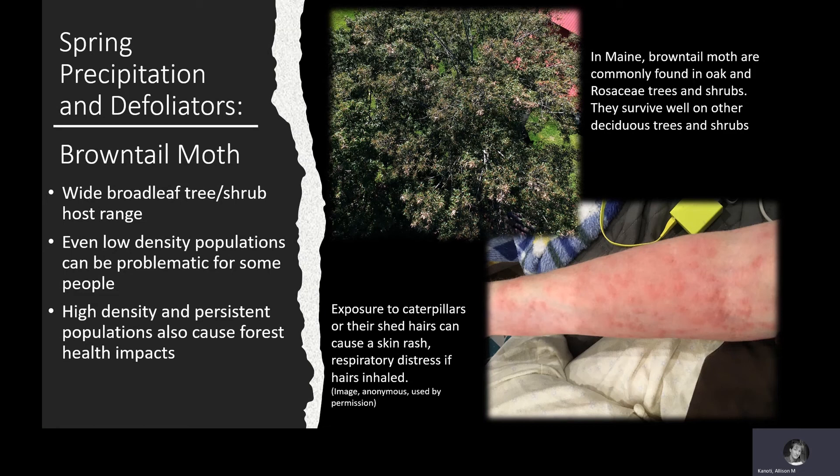The primary problem with brown-tailed moth is that even at low populations it can cause human health and quality of life impacts. Encounters with the caterpillar's hairs can cause a painful, itchy rash in some people, and when inhaled, the hairs can cause respiratory distress. Brown-tailed moth becomes a forest health issue when there are persistent high-density populations or other stressors, which can lead to both branch dieback and tree mortality.